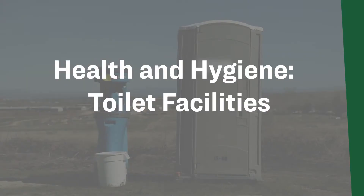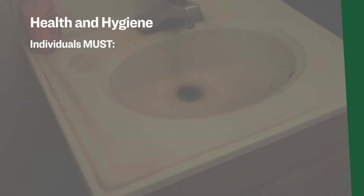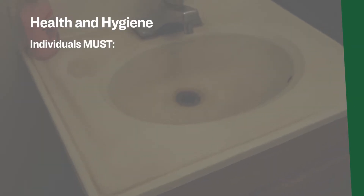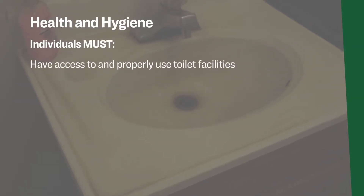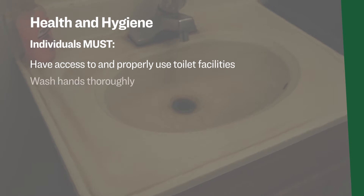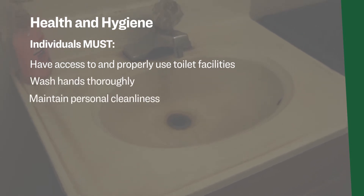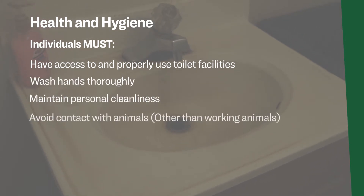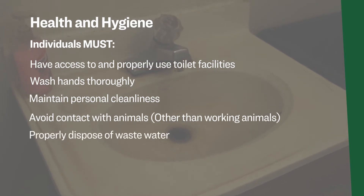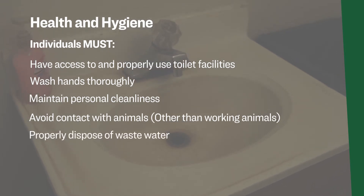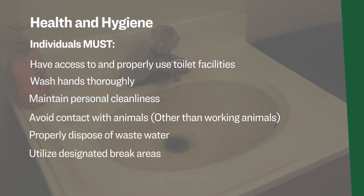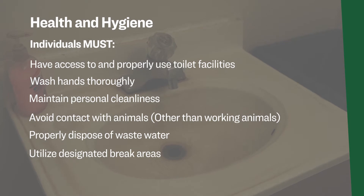Hygiene is a critical part of preventing contamination of covered produce. Individuals must have access to and properly use toilet facilities, wash hands thoroughly, maintain adequate personal cleanliness, avoid contact with animals other than working animals, properly dispose of wastewater, and utilize designated break areas.